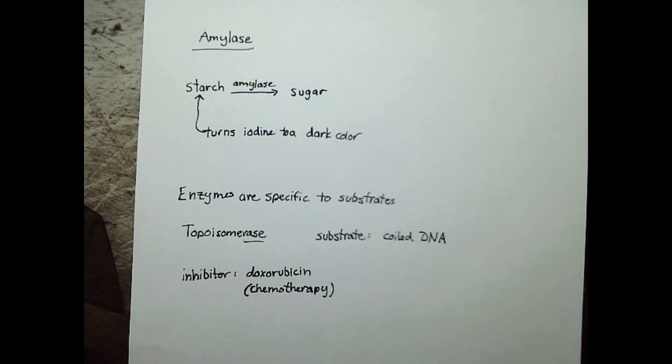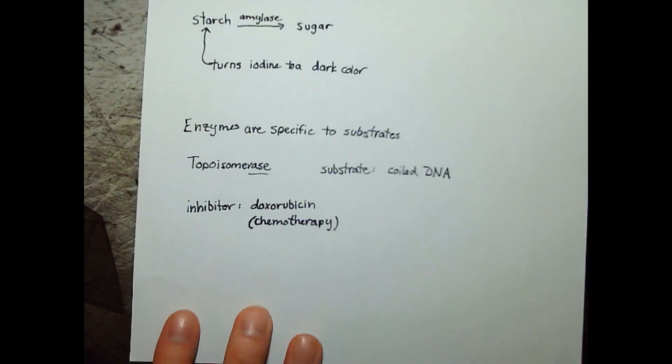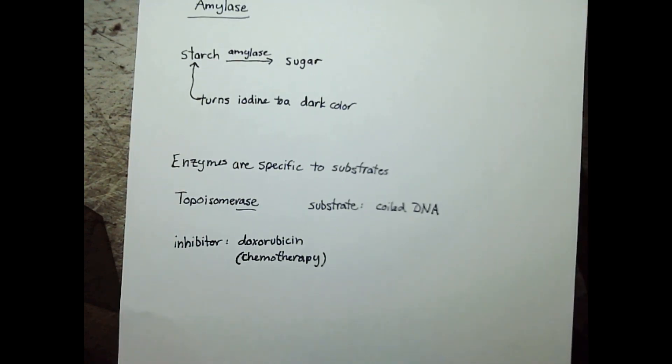The iodine should stay the same gold amber color because the amylase broke down all the starch and only simple sugars remain. Simple sugars should not change the color of iodine, so we shouldn't see a dark color if the sugar solution worked properly.